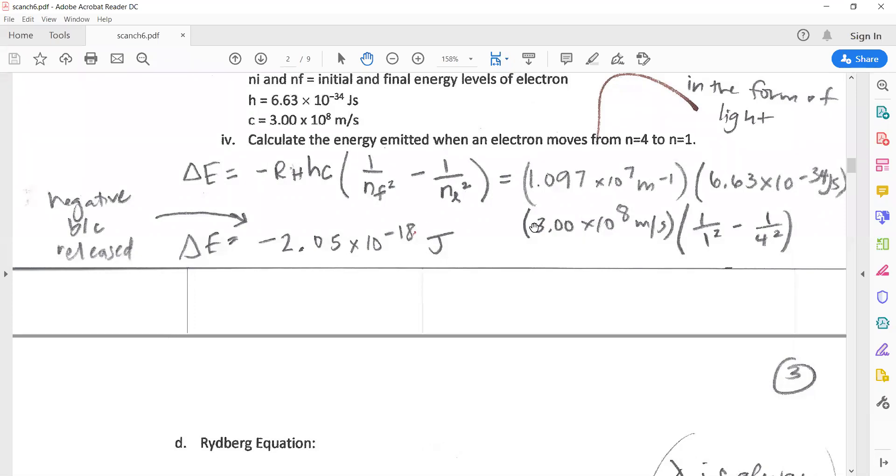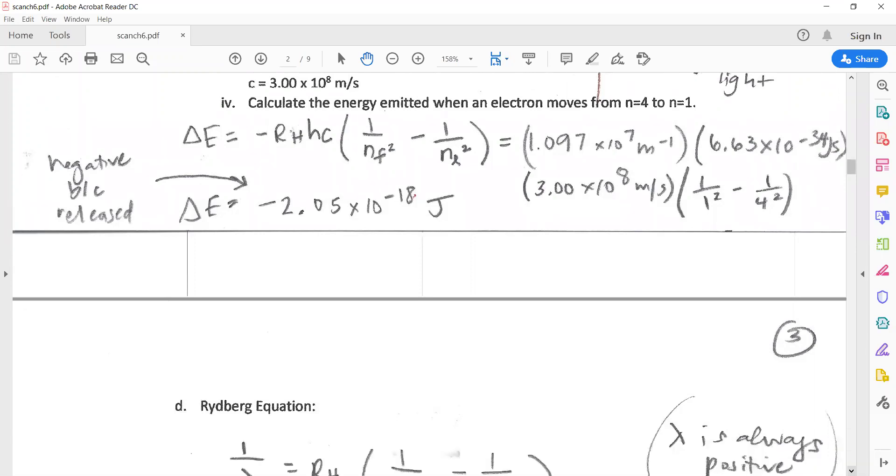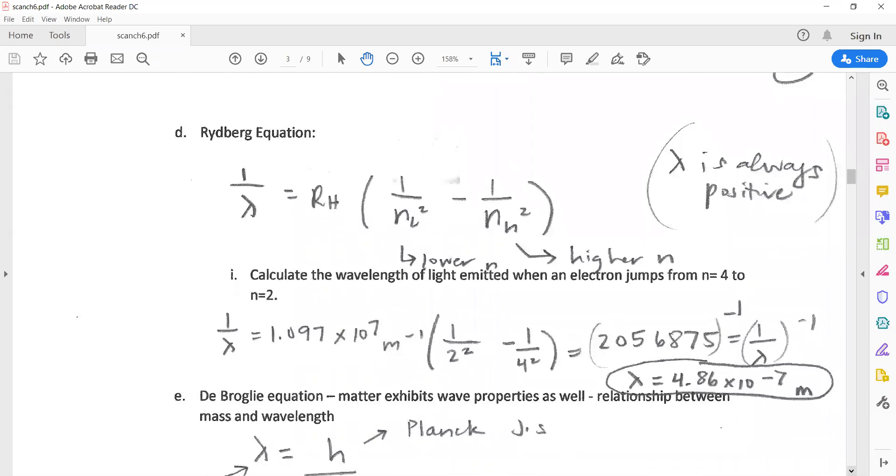The meters go away, the seconds go away, and you're left in joules for energy. Next, to find wavelength we use the Rydberg equation, which is the one that's equal to 1 over lambda. You still use Rydberg's constant and two n values, but this time we're always putting the lower n here and the higher n here. This is because wavelength has to be a positive value. It's never going to be a negative wavelength.